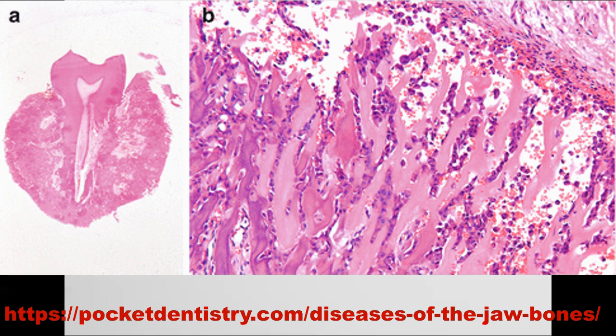The histology shows a cemental mass lined by cementoblasts, very similar to an osteoblastoma. You must have intimate association with a tooth root to diagnose it as cementoblastoma — specifically, intimate association with the dentin of the tooth root and absence of a periodontal ligament. This is usually treated with surgical resection, which has very low recurrence. Root amputation has been described, but is being done less and less.